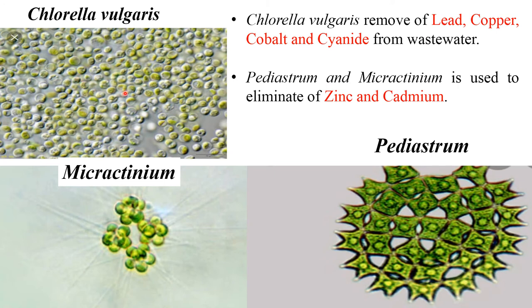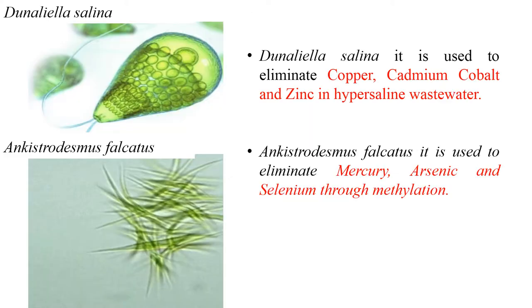Chlorella vulgaris removes lead, copper, cobalt, and cyanide, whereas Pediastrum and Micractinium are used to eliminate zinc and cadmium. Dunaliella salina eliminates copper, cadmium, cobalt, and zinc in hypersaline wastewater, whereas Ankistrodesmus falcatus eliminates mercury, arsenic, and selenium through methylation.